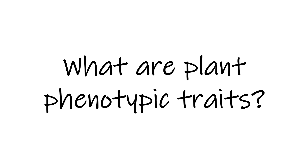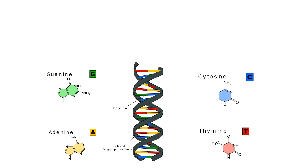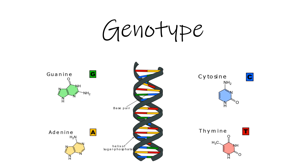But what are plant phenotypic traits? First, we need to talk about DNA. The genetic constitution — the sum of all the genes of an individual encoded in DNA molecules — is called genotype. The genotype stores information that translates into proteins.